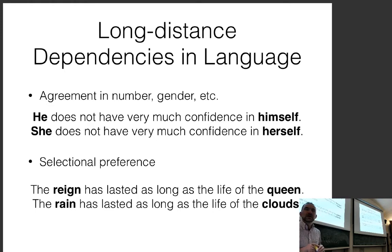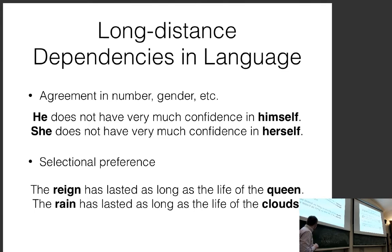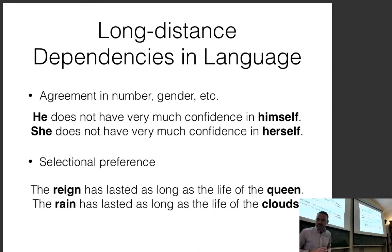There was a paper at ACL last year by Adi Kuncoro, who was an MLT student here before moving to Oxford and DeepMind. They showed how LSTMs can do a pretty good job of these hierarchical structure tasks, but models that explicitly account for sentence structure can do better. Overall, there are many things RNNs can handle better than CNNs in this case.